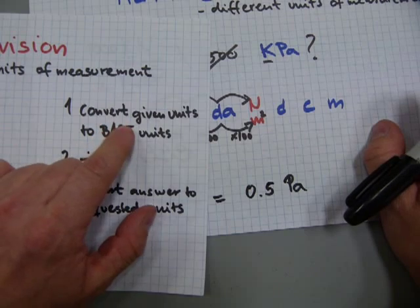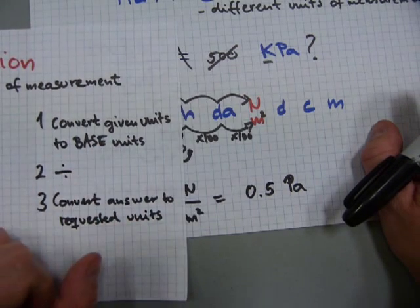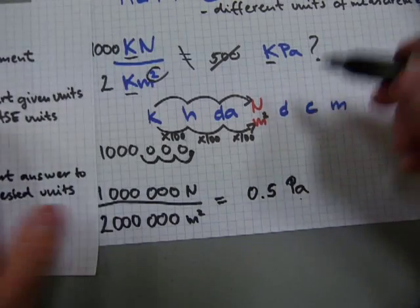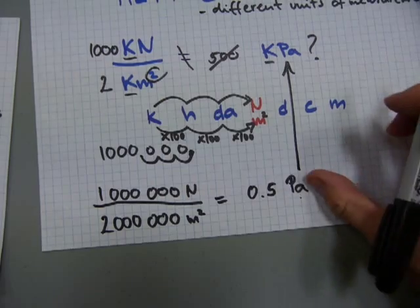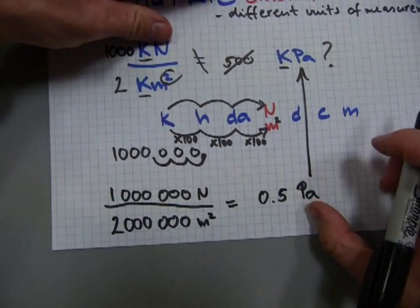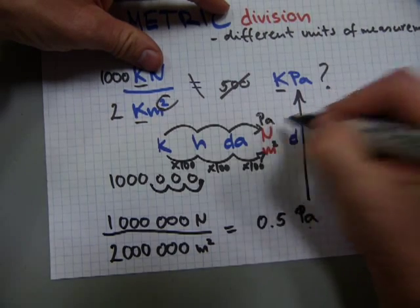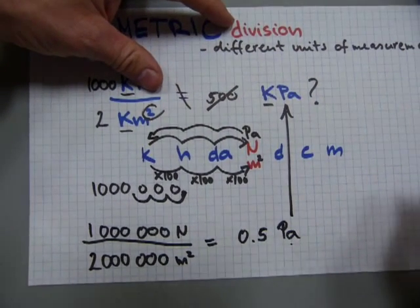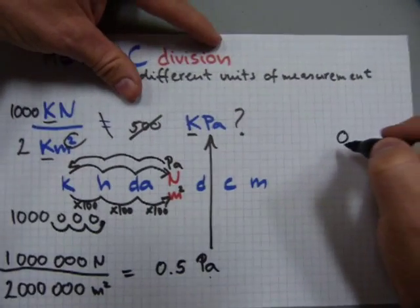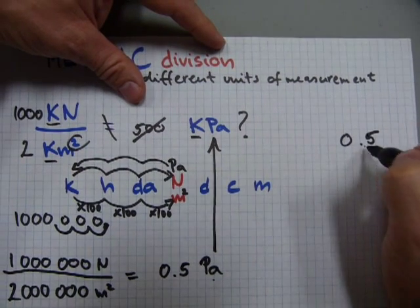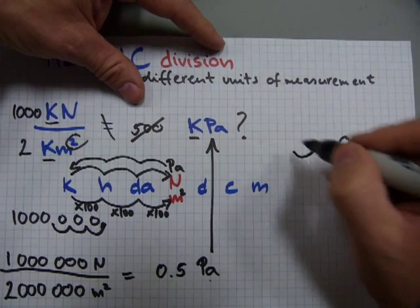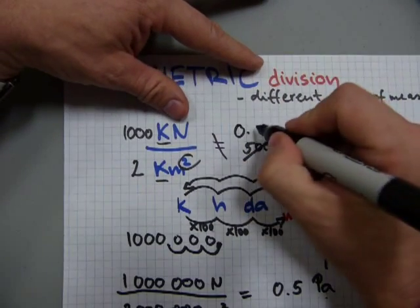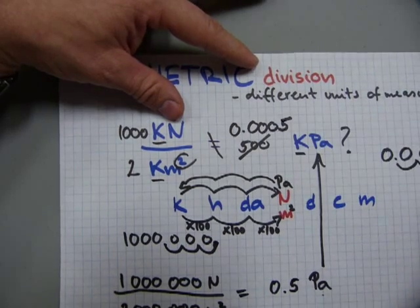So far we're done with converting the given amounts to base units. We did the division. And last step, converting this answer to the requested amount, kilopascals. We're going from Pascals to kilopascals. Pascal is a prefix-less base unit, so it's here. Pascal. And we're going to kilopascals. That's gonna be three jumps in that direction. What that means is, starting with 0.5, we're moving the decimal dot three spots over that way. One, two, three. That's the final answer: zero point and then three zeros, and then followed by the digit five kilopascals.